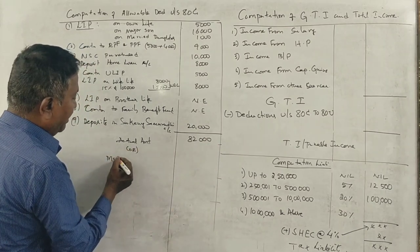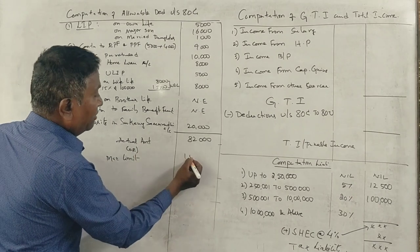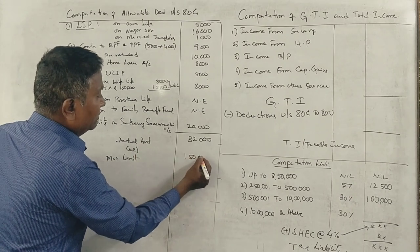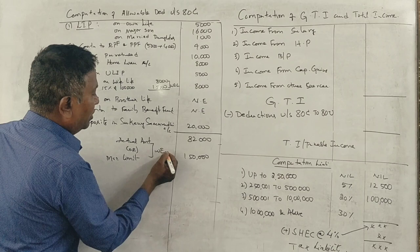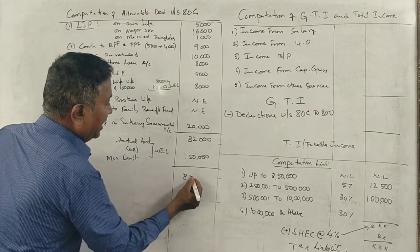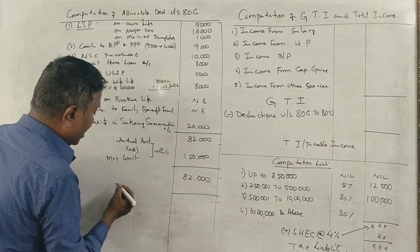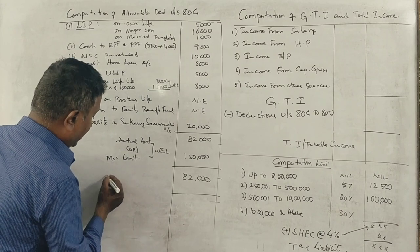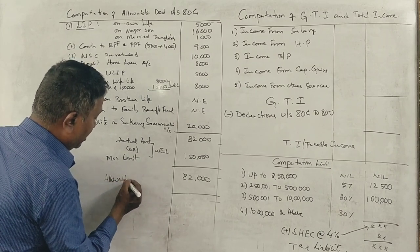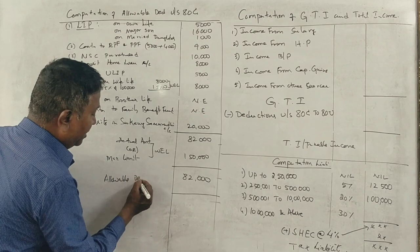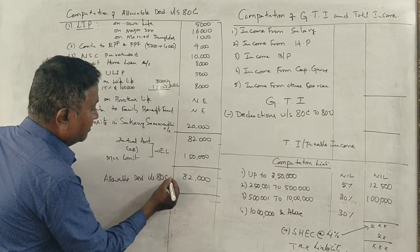Maximum limit is 1,50,000. The actual total is 82,000. Whichever is lower — 82,000 is lower. So 82,000 is the allowable deduction under Section 80C.